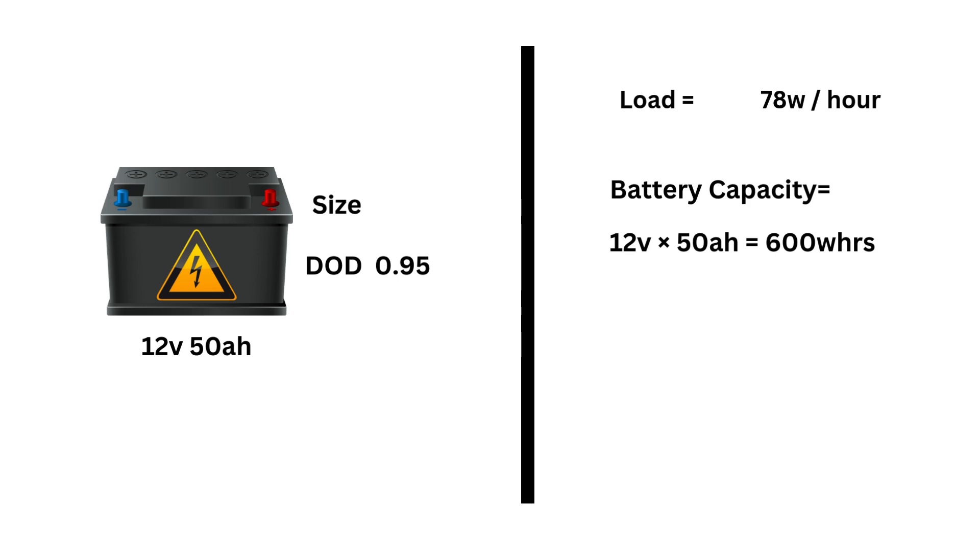DoD is the amount of battery charge we can use from a battery which has 100% state of charge, meaning it's fully charged. You can use 95% of lithium battery charge, and this gives us a 0.95 battery DoD. 600 watt-hours battery capacity divided by 0.95 battery DoD equals 570 watt-hours of battery charge that is usable.